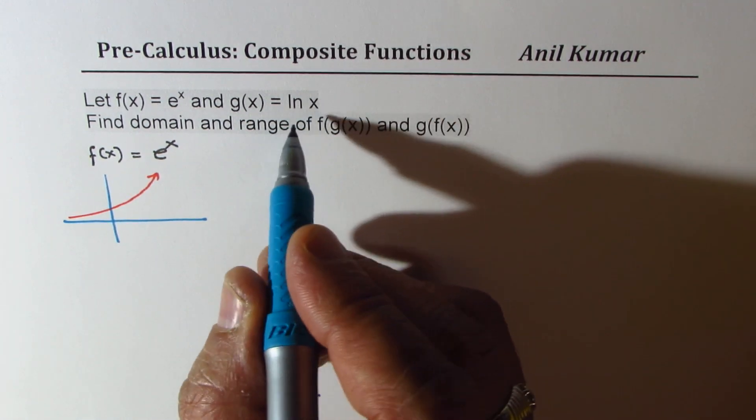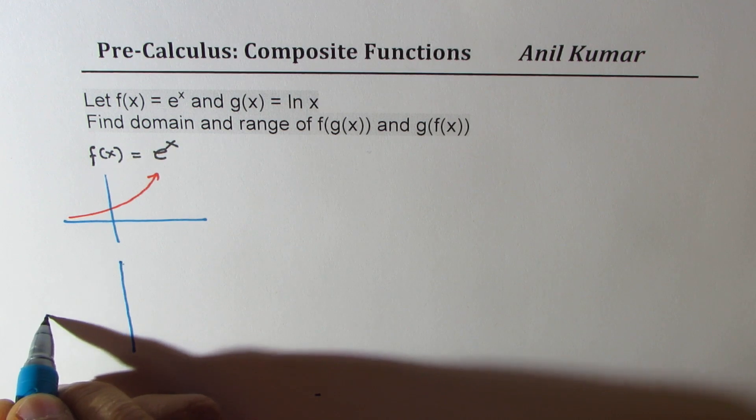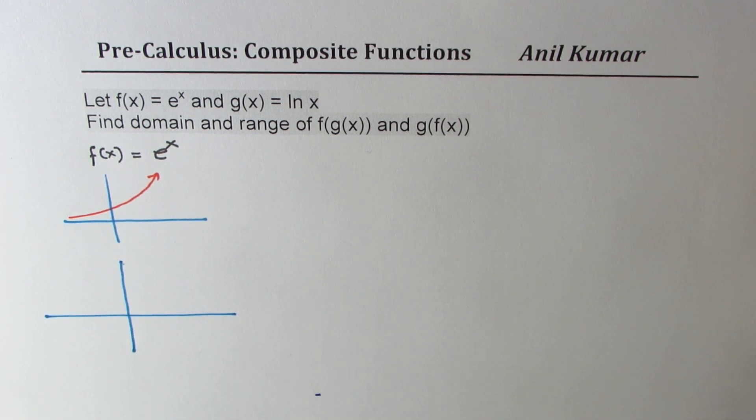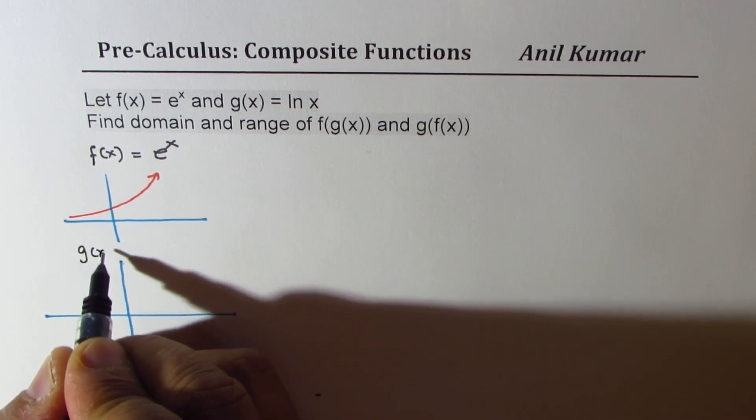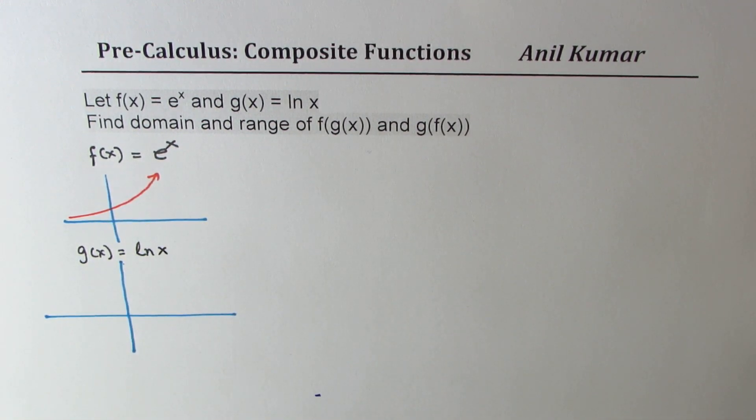How would the log to the base e, which we say ln, be sketched? It looks kind of like this. Let's talk about g(x) now, which is ln x.